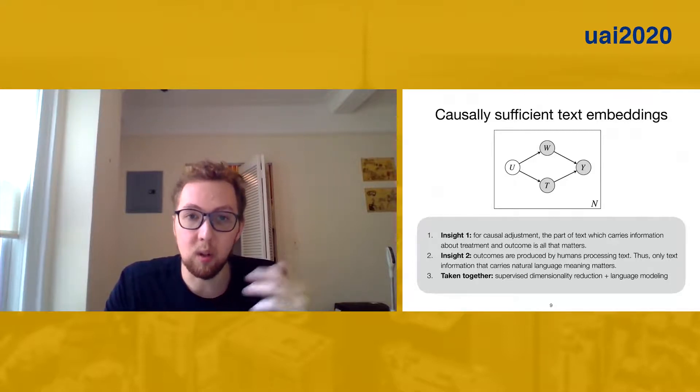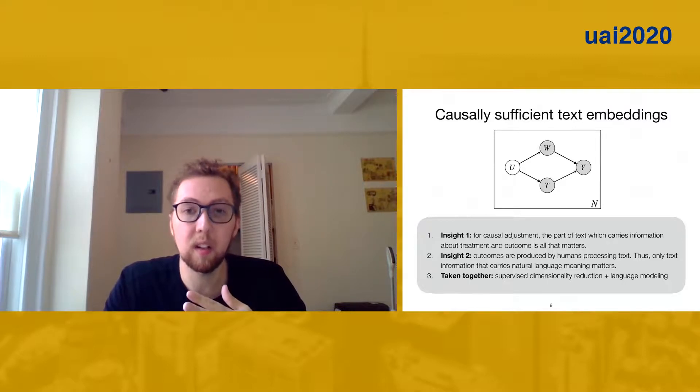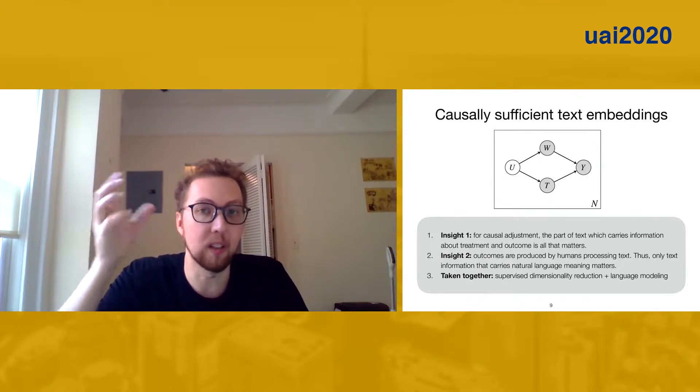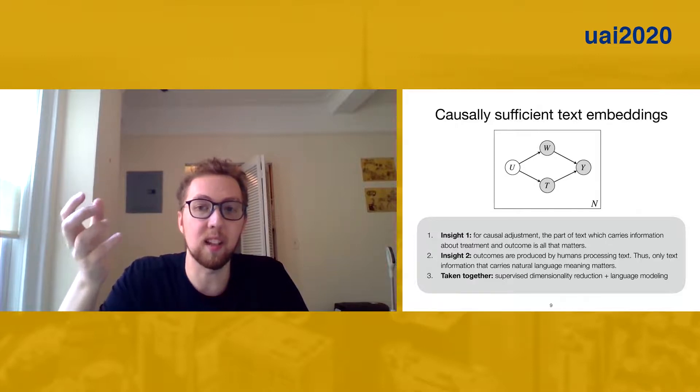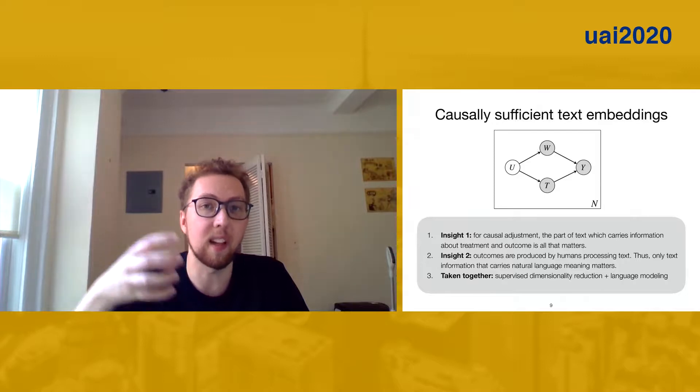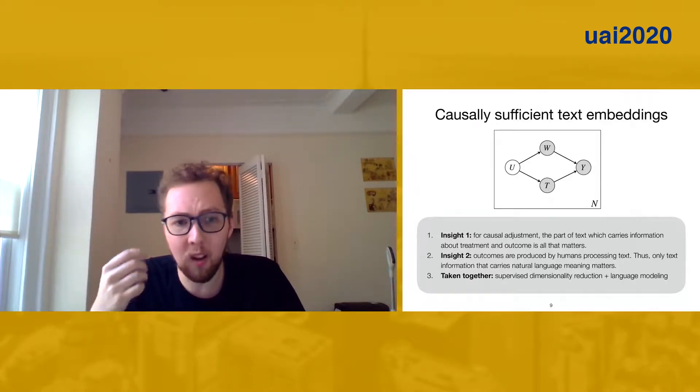The second insight is that all of these outcomes, like the scores on Reddit posts, are produced by humans reading the text and processing it. And so in particular, even though there's all kinds of in principle weird correlation structures possible in text, what matters is really just the natural language structure of the text - the things that are significant are things like topic and sentiment, like human-compatible concepts, because humans are actually generating the labels.